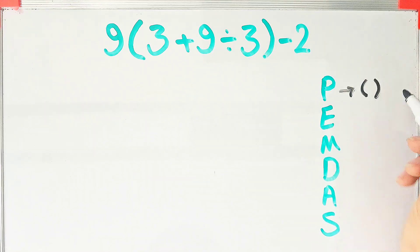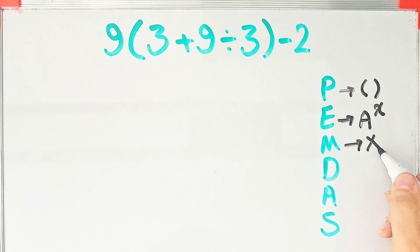In this rule, P stands for parenthesis, E stands for exponent, M stands for multiplication, D stands for division, A stands for addition, and S stands for subtraction.